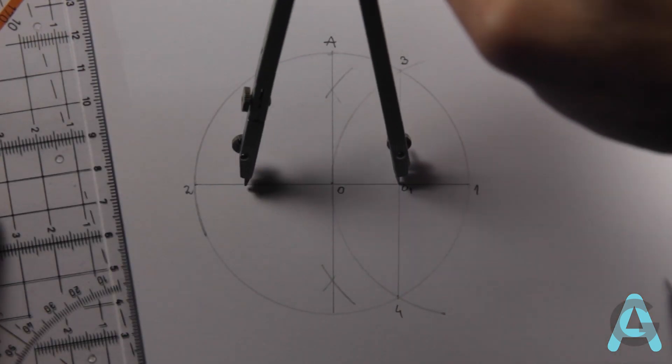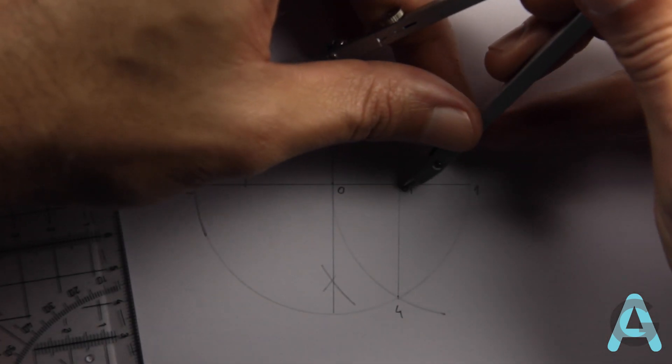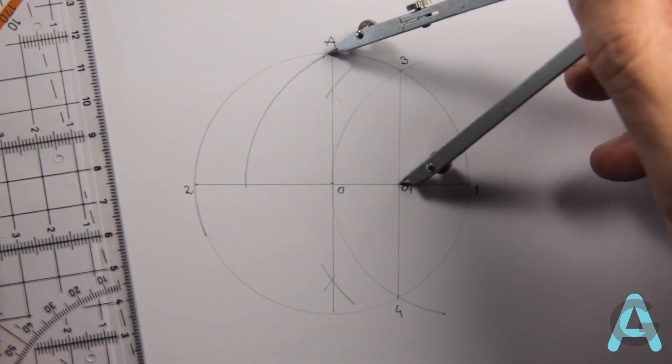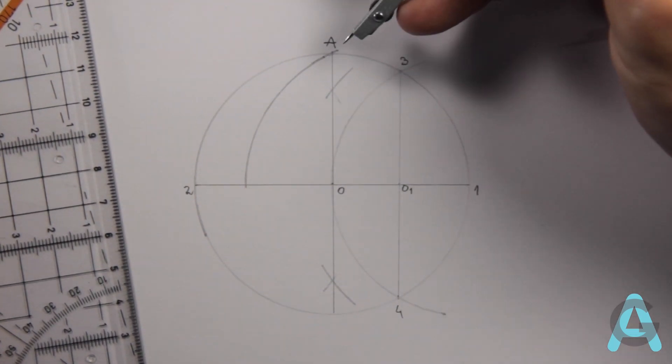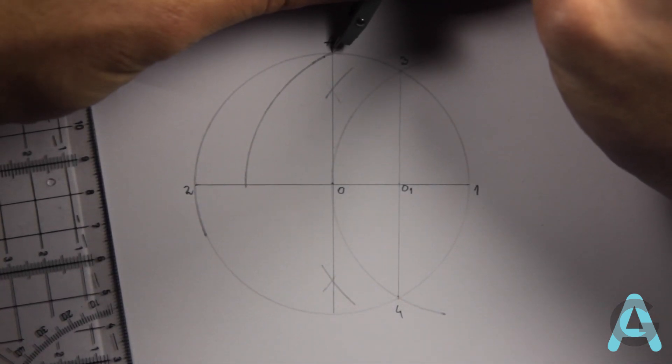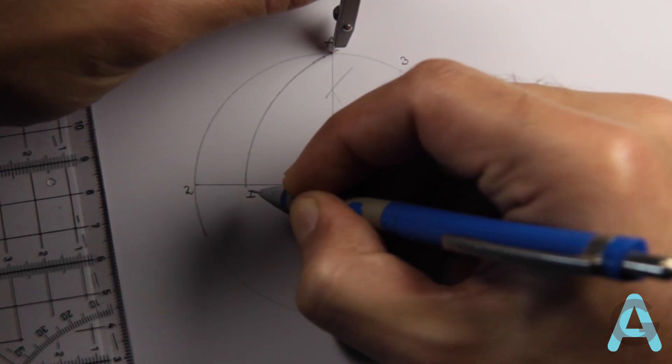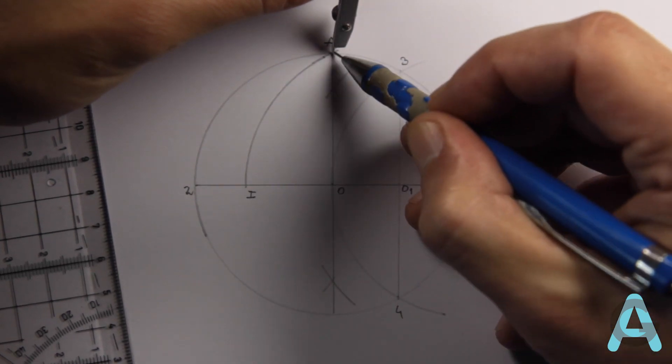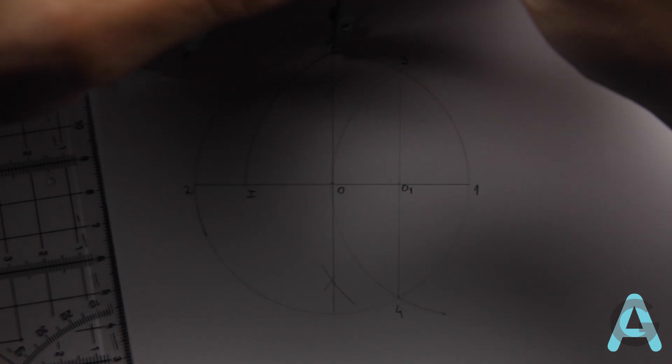Now, trace an arc until the diameter 2-1. Now, switch the needle to the point A and open the compass into the point I. The distance between A and I is the same distance as the side of the pentagon.